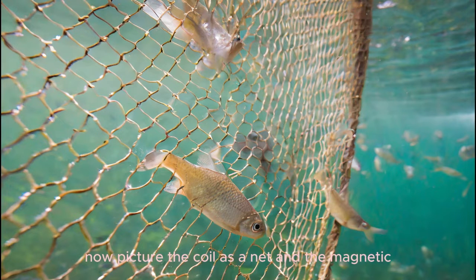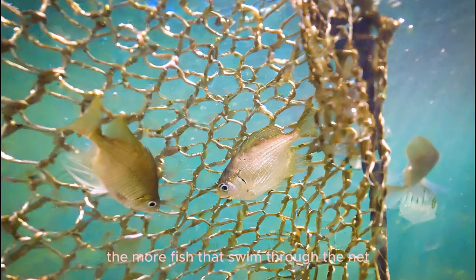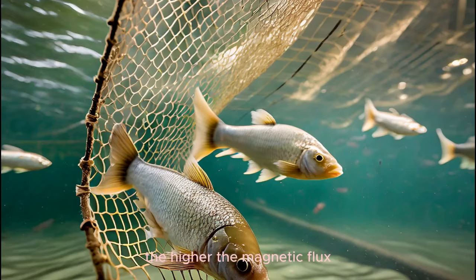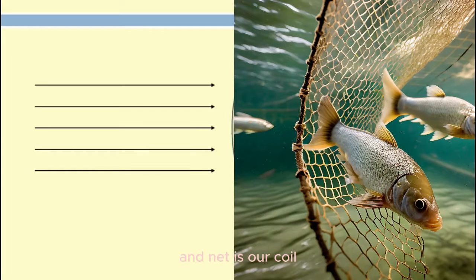Now, picture the coil as a net, and the magnetic field lines as fish swimming through it. The more fish that swim through the net, the higher the magnetic flux. So now in our case, the fish are the magnetic field lines, and the net is our coil.